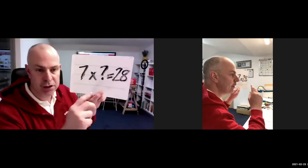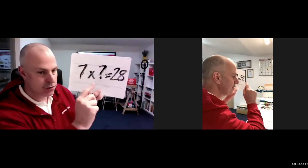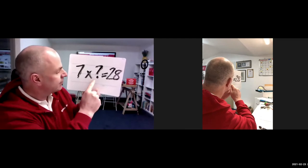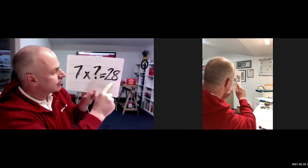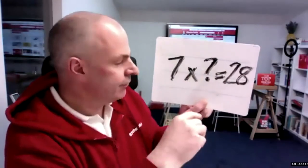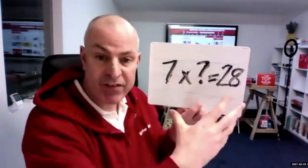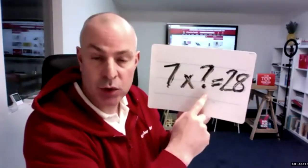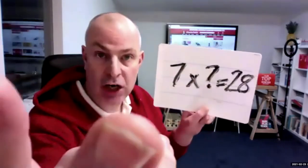I've got to do two versions. Version one: seven times something equals 28. To make it even more powerful, I'm emphasizing the important bit we need to work out. Eye contact.